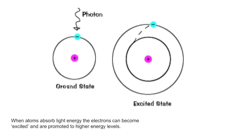That can happen when an atom absorbs energy, usually in the form of light. In its lowest energy state — normally — an atom would be in what we call its ground state. That's the lowest energy state, most stable and most energetically favourable. But if the atom absorbs light, electrons can become excited and get promoted to higher energy levels. The diagram here shows a hydrogen atom in its ground state, with the electron in the first energy level; the atom then absorbs a photon and the electron gets promoted to the second energy level.